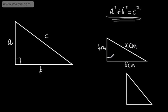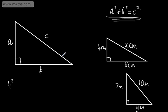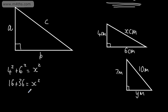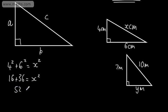When we're using Pythagoras' theorem, we need two known sides to find the unknown one. Let's say that's 10m and this is going to be 7m - we could find this length here, which we'll call Y m. On this one we need the hypotenuse; on this one we need a shorter side. Starting here, 4 squared added to the other shorter side squared is equal to the hypotenuse squared. So 4 squared plus 6 squared is equal to X squared.